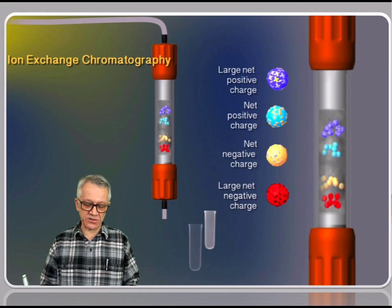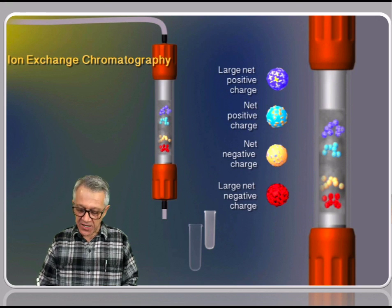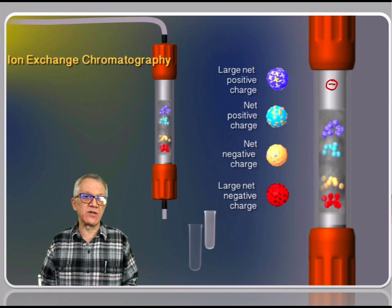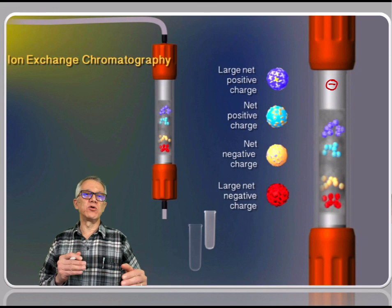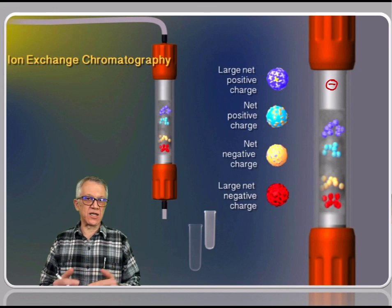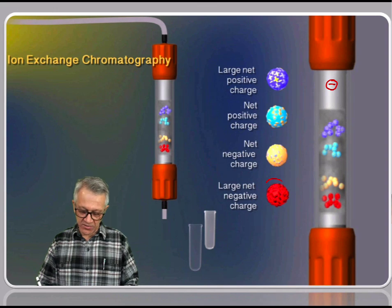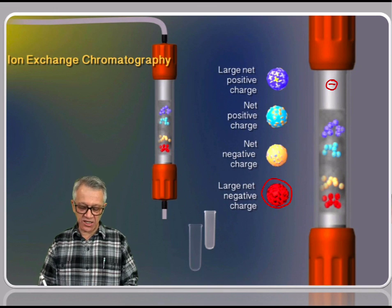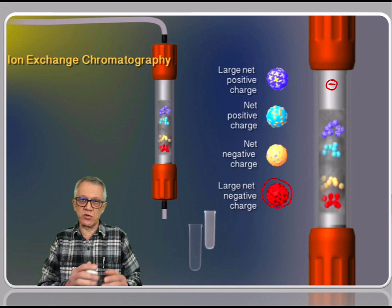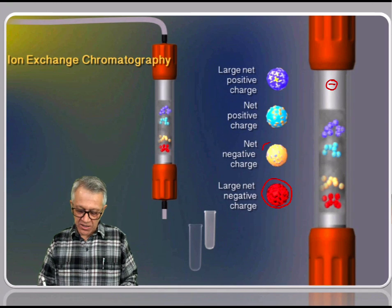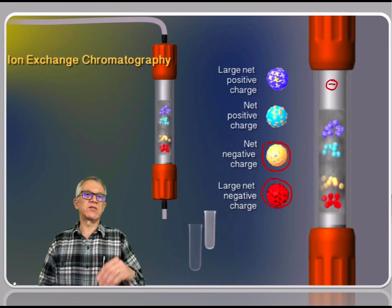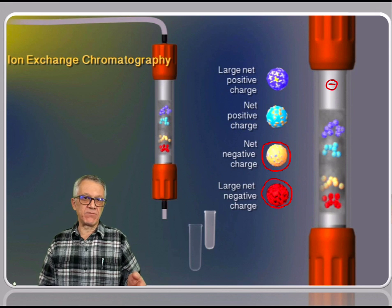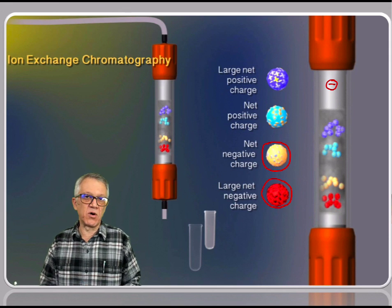The example we discussed in class is an example of cation exchange chromatography. The stationary phase is formed of particles that are negatively charged, so proteins that are negatively charged are not going to bind — they will pass through. Examples of proteins are depicted here. The red protein has a large net negative charge, so it's not going to bind at all. Same for the yellow protein, which also has a negative charge. The proteins that are going to bind are those that have a positive charge at the pH of the mobile phase.